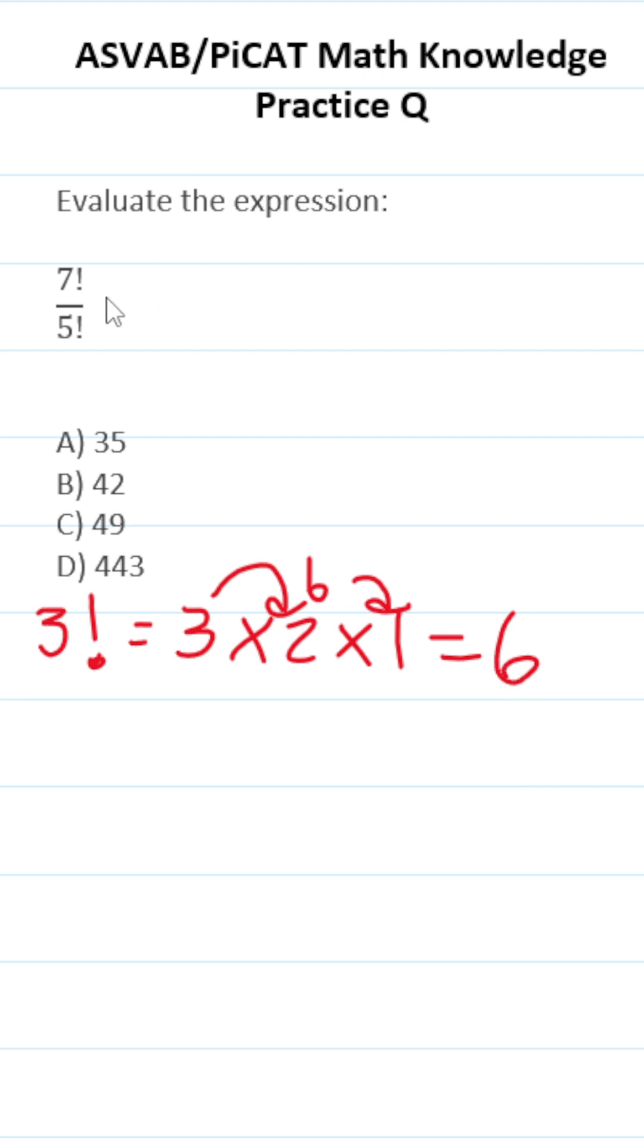Let's apply the same thing here. 7 factorial is the same thing as 7 times 6 times 5 times 4 times 3 times 2 times 1. 5 factorial, likewise, is the same thing as 5 times 4 times 3 times 2 times 1.